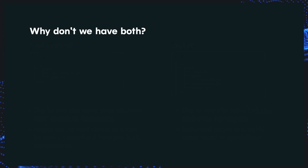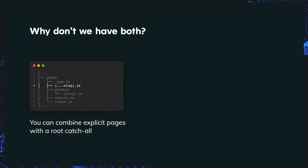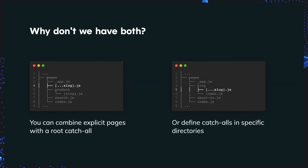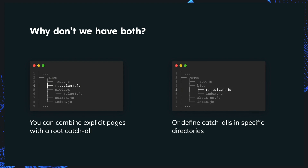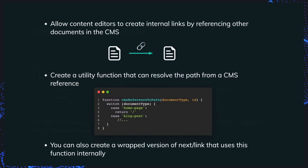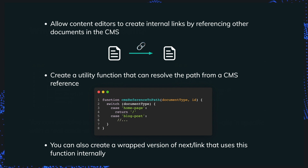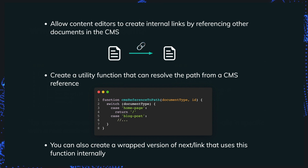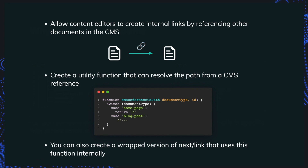For many projects, the right approach will actually be a combination of these techniques — that might be using explicit pages to manage some of the more complex use cases, and then a route catch-all that handles everything else. Or you can choose to define catch-alls in specific directories where content editors need some flexibility to organize pages. Whichever approach you choose, the last important piece to tie everything together is allowing content editors to represent internal links between pages by referencing other documents in the CMS. You'll need to create some kind of utility function that is able to resolve these CMS references to URL paths in a canonical way.